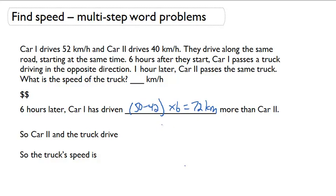So that means car 2 and the truck have to drive 72 kilometers in one hour. So the truck's speed has to be 72 minus 40 equals 32 kilometers per hour.